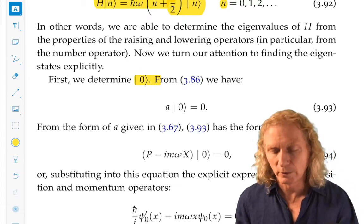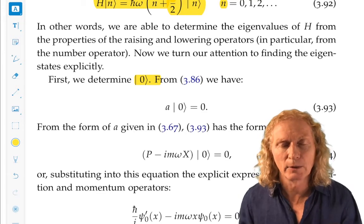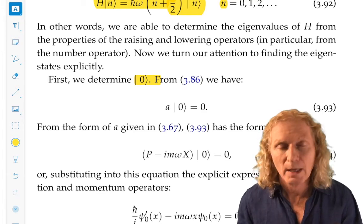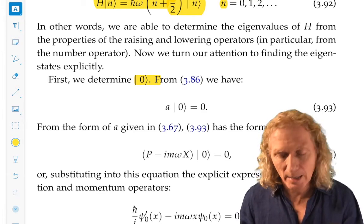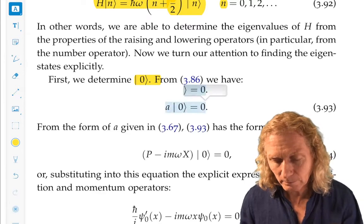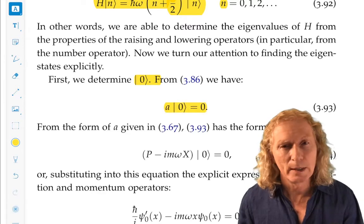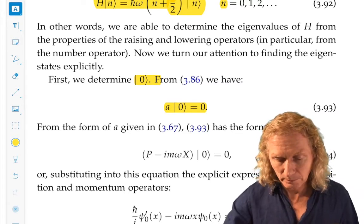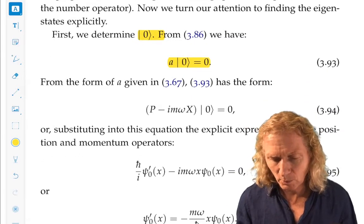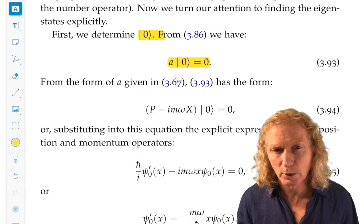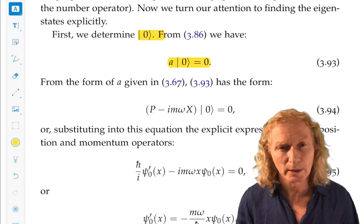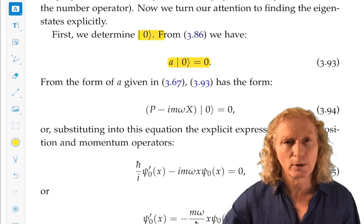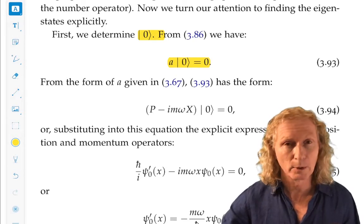Here's the way we get a hold of that. If we have the ground state ket zero, if we act on it with a, you can't go any lower than zero, so you get zero. Now let's write that out a little more clearly, and you can see that we're going to get a differential equation that we can solve for ket zero, the ground state.